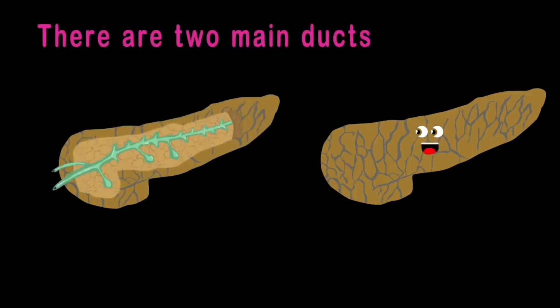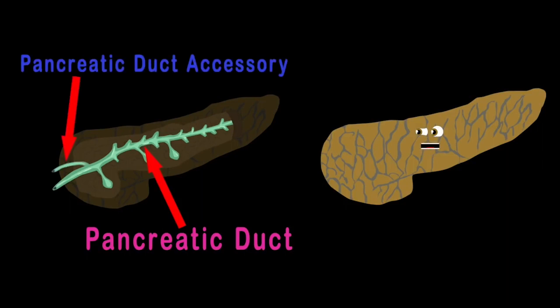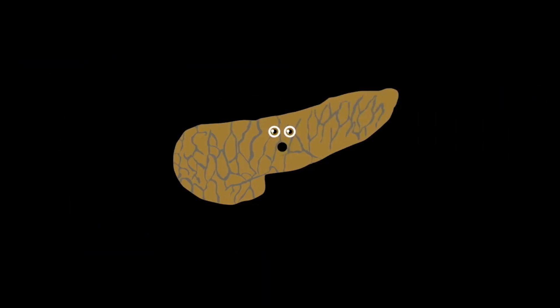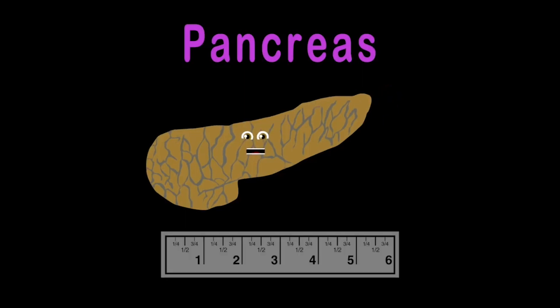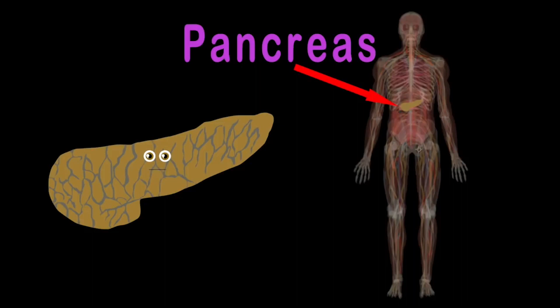There are two main ducts in the pancreas: the pancreatic duct and pancreatic duct accessory. I am your pancreas! I'm about six inches long. I sit behind your stomach, across the back of your abdomen.